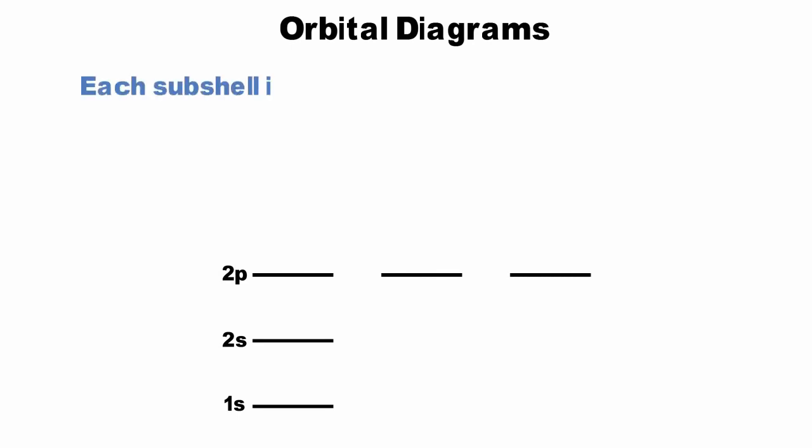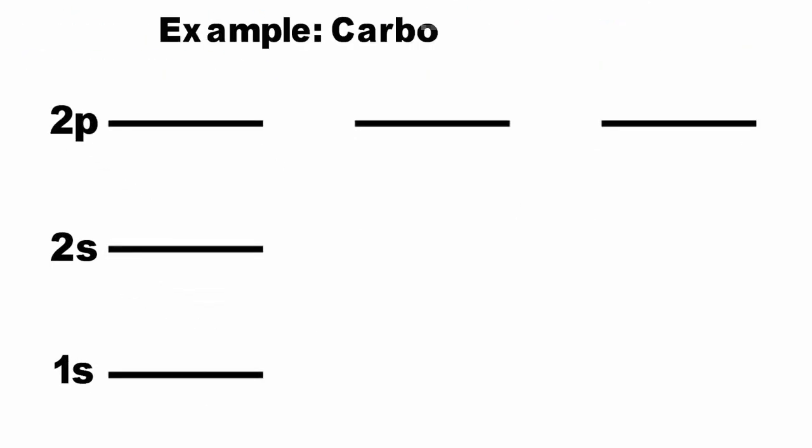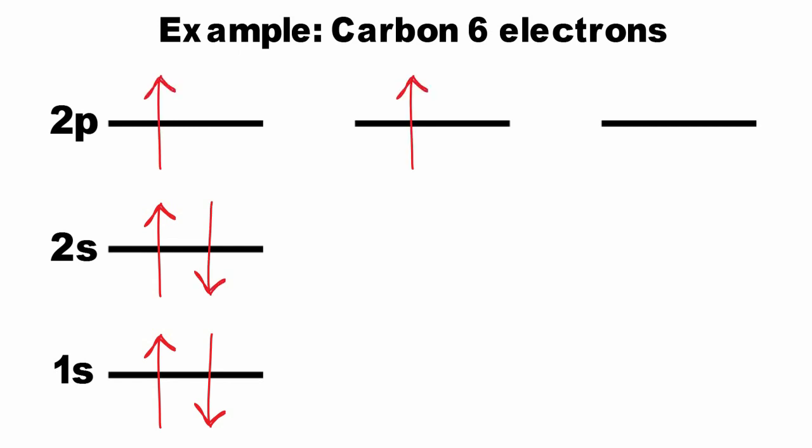Electron configurations do not give any information about the magnetic quantum number or spin of the electron. So, we use orbital diagrams, the second way to describe electrons in an atom, to present this information. In orbital diagrams, each shell is represented as a line or a circle, then filled with arrows pointing up or down to represent the spin of an electron. For carbon, we can fill the orbitals from the lowest energy level to the highest. The electrons in the p orbitals are not paired according to Hund's rule. An easy way to remember how the orbitals fill is to think of electrons as being lazy. It costs an electron energy to pair up or move to a higher level.